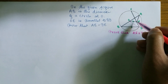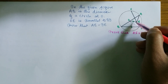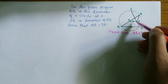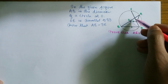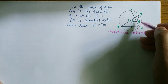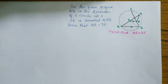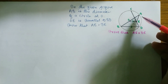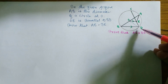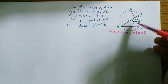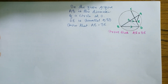We consider triangles OEA and OED and show they are congruent. If we show these two triangles are congruent, then definitely AE and DE are equal by corresponding sides of congruent triangles. Now our aim is to show triangles AOE and DOE are congruent.